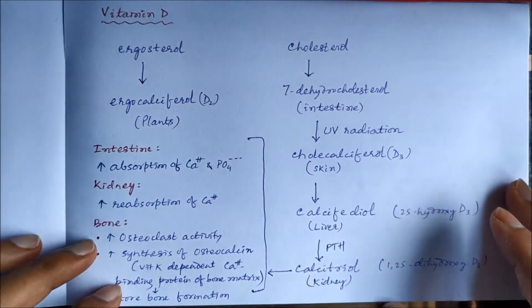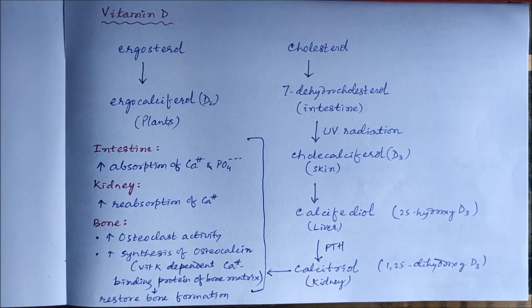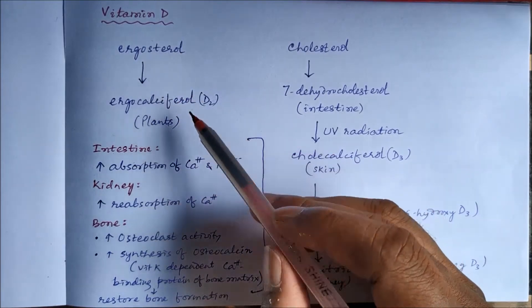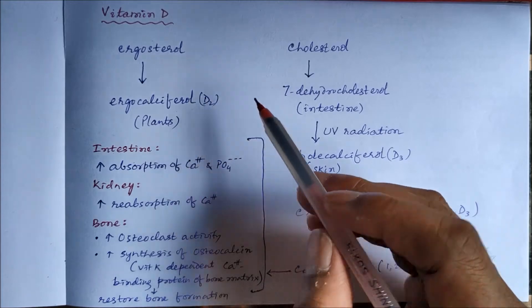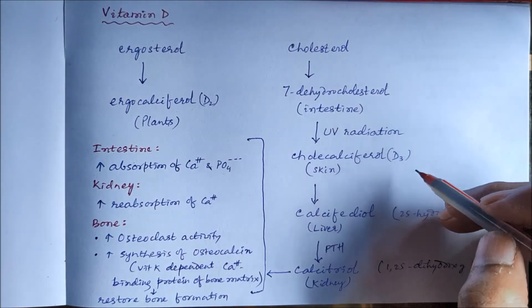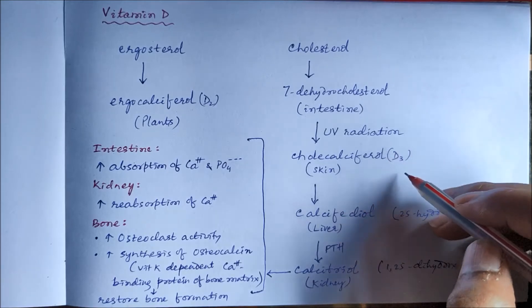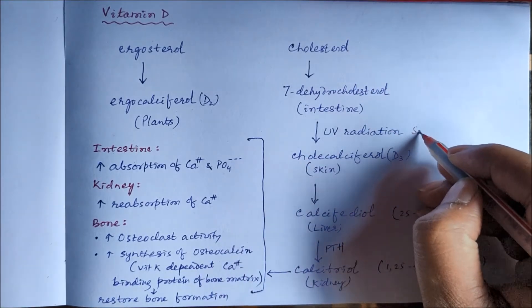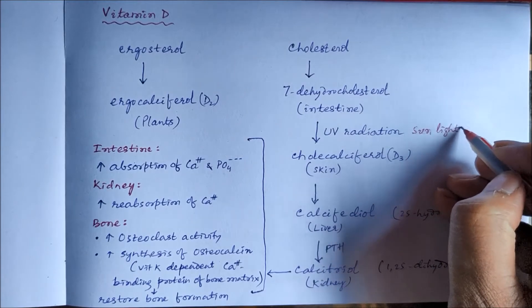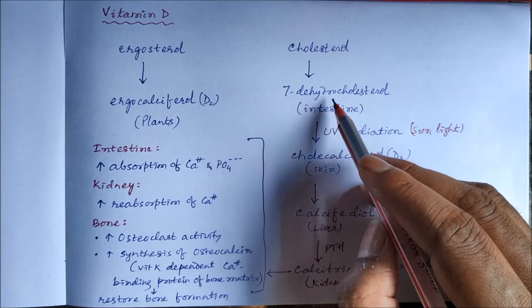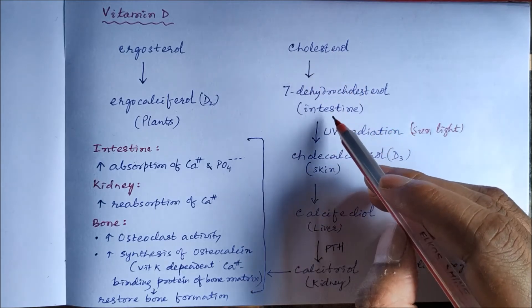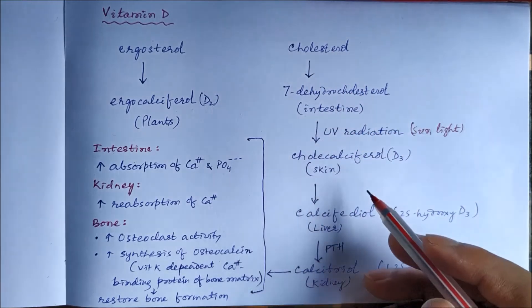Let us start with vitamin D. From plant sources, ergosterol can be synthesized to ergocalciferol — this is vitamin D2. We also synthesize vitamin D3, cholecalciferol, from cholesterol. In the presence of sunlight, UV radiation converts seven-dehydrocholesterol to cholecalciferol in the skin.